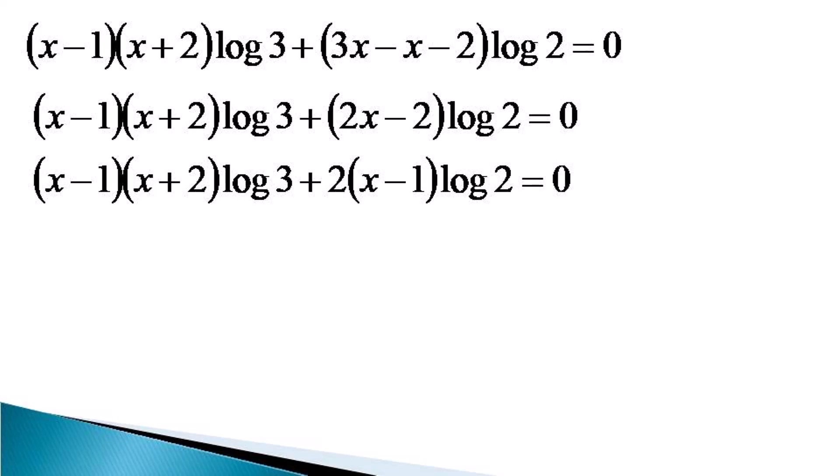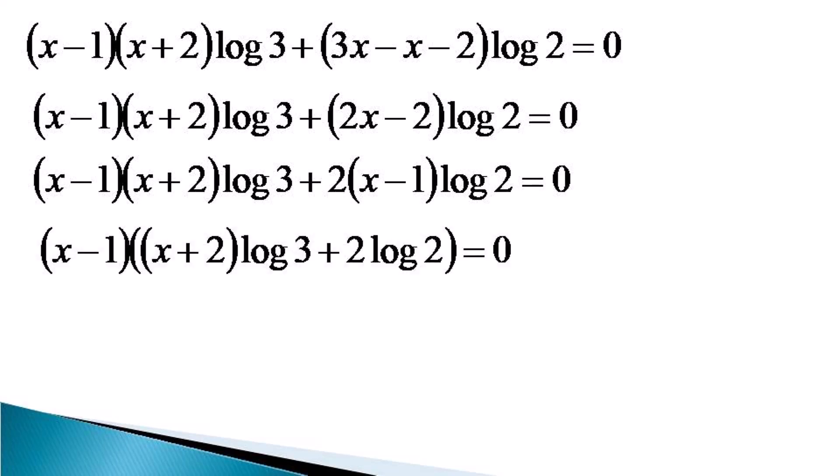We take x minus 1 common from the whole equation and get: x minus 1 times the quantity x plus 2 times log 3 plus 2 log 2, equal to 0. Here we get our first solution: x minus 1 equals 0, implying x equals 1.